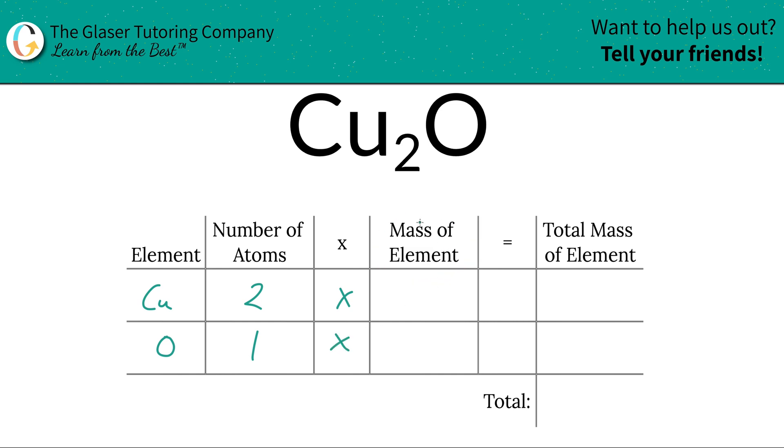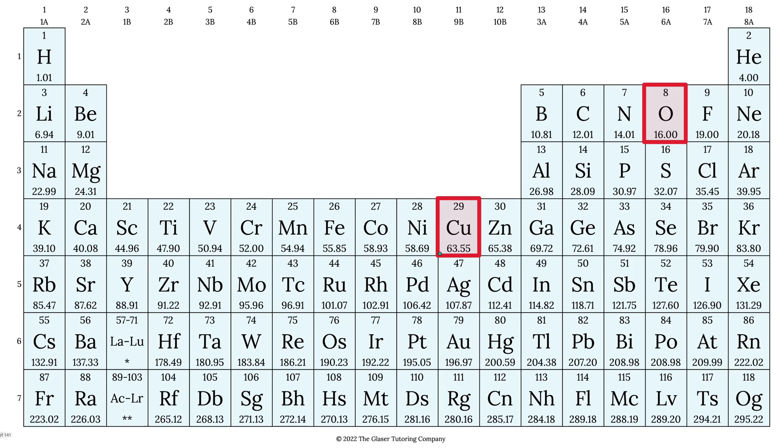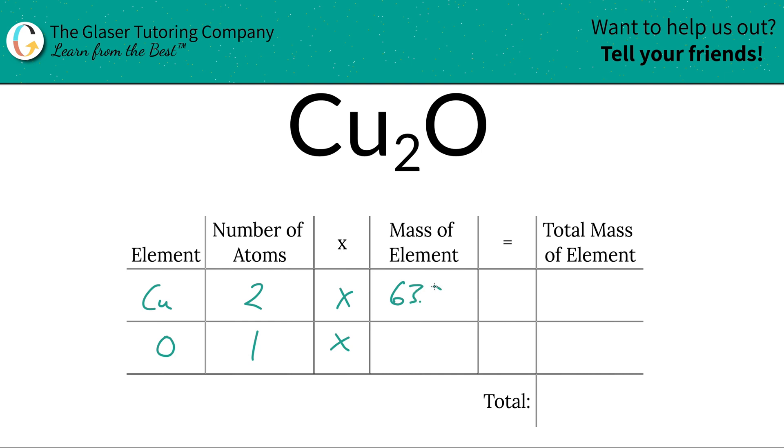Then we're going to take those number of atoms multiplied by the mass of each particular element. That's found on the periodic table. Here's the mass of copper, 63.55 and oxygen is about 16. So those are the masses we're going to write down. So this is 63.55 and oxygen is about 16.